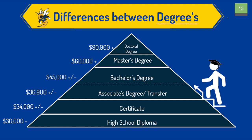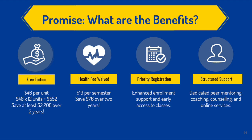Earlier we discussed the opportunity of receiving free college. Through the Promise Program, you can earn two years of free tuition, get the health fee waived, receive priority registration, and structured support. You can save at least $2,208 over the two years and $76 over two years with the health fee. With enhanced enrollment support and early access to classes, you will be able to select the classes that you prefer. And lastly, you will have a dedicated peer mentor, coach, and receive counseling and online services.